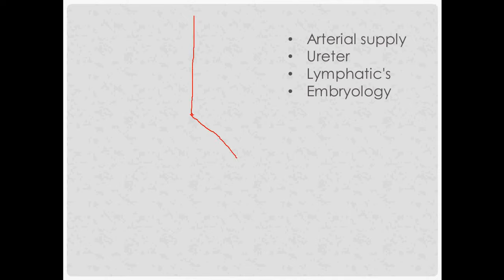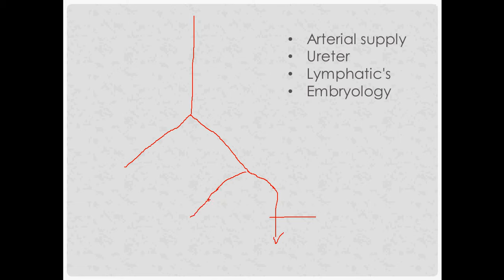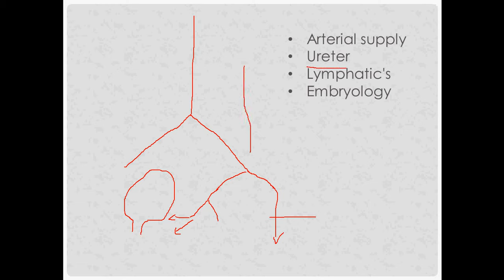Vascular anatomy: the abdominal aorta divides into common iliacs, which further divide into external and internal iliacs. The external iliac becomes the femoral artery after the inguinal ligament. The internal iliac's anterior division gives off the uterine artery, vaginal artery, umbilical artery, and others. The ureter descends from the kidney, passes above the common iliac bifurcation, then passes beneath the uterine artery — the classic 'water under the bridge' relationship.